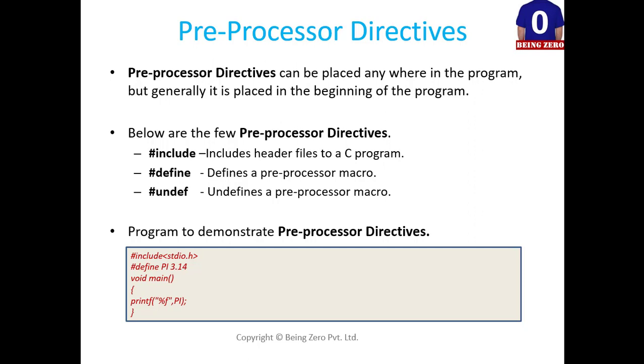Let's go through a program to understand more of it. If you will see the first statement #include followed by the header file name, this statement will include the header file within the program so that the function within the header file could be used. Next statement is #define followed by the variable and value. Then, within the main function we are trying to print the value of that variable.